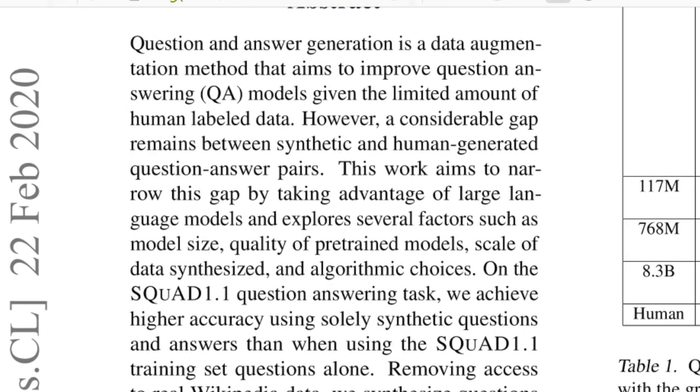Question and answer generation is a data augmentation method that aims to improve question answering models given the limited amount of human labeled data. This is pretty true for most realistic use cases. If you're trying to build a question answering system of some custom domain, like technical reports and repositories, it's really hard to have large scale human annotated data sets where you're given the context, somebody would read the question, and then they would highlight what is the answer that corresponds to this question and context.